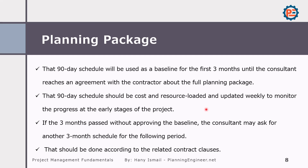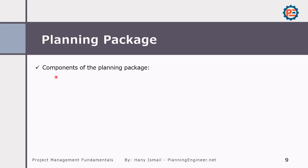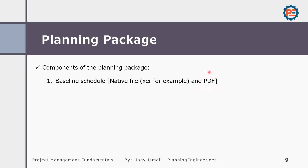The 90-day schedule will be used as a baseline for the first three months, until the consultant reaches an agreement with the contractor about the full planning package. The 90-day schedule should be cost and resource loaded and updated weekly or monthly according to your contract to monitor the project in the early stages. If the three months pass without an agreed baseline, you might consider doing another three months, according to your contract. The components of the planning package should include: baseline schedule, native file XER for Primavera or Microsoft Project according to your contract, and PDF. I insist on having a PDF version of each document submitted because I don't want anything to go wrong while importing and exporting.